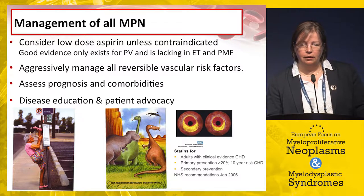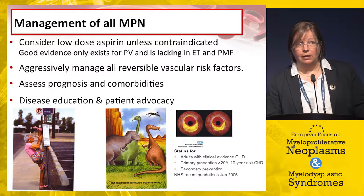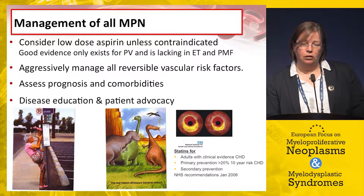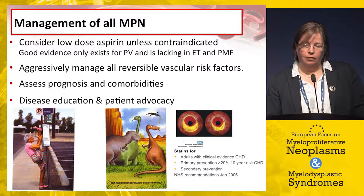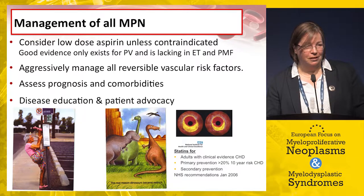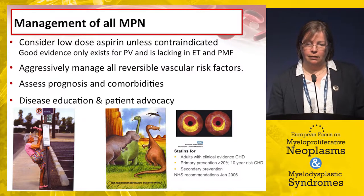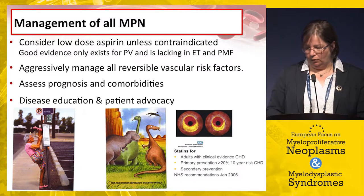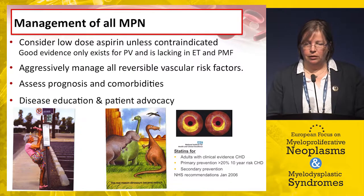We have to assess prognosis, think about comorbidities and their impact, and consider disease education. There's been discussion about whether these are blood cancers — I have no doubt that myelofibrosis is a blood cancer, and I also tell my patients with ET and PV they have a blood cancer. I find it useful to put patients in touch with patient advocacy groups, as patients have often already googled information.